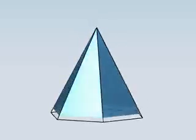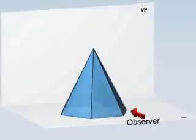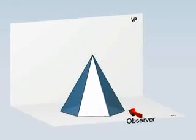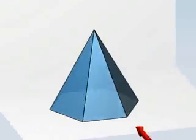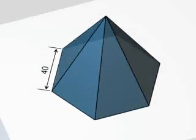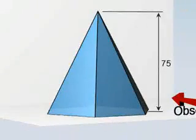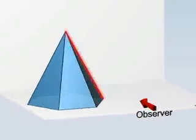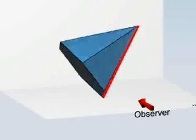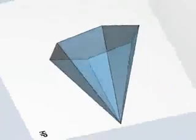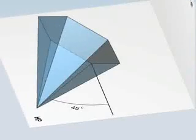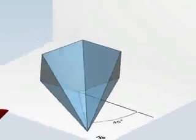The problem is to generate the projections of the hexagonal pyramid which is 40 mm in base, axis length is 75 mm and has a slant edge on ground making an angle of 45 degrees. First we will draw the XY line.